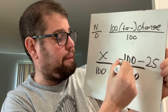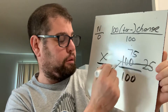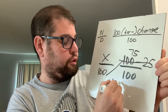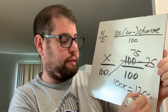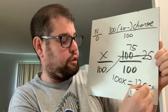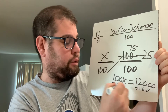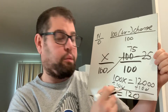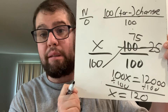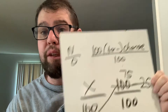A hundred minus twenty-five is seventy-five, so I cross that off and put seventy-five as my new number. I cross multiply and get 100x equals 12,000. I divide by one hundred and get x equals 120. That means the TV is no longer $160 — you can buy it for $120. Very exciting!